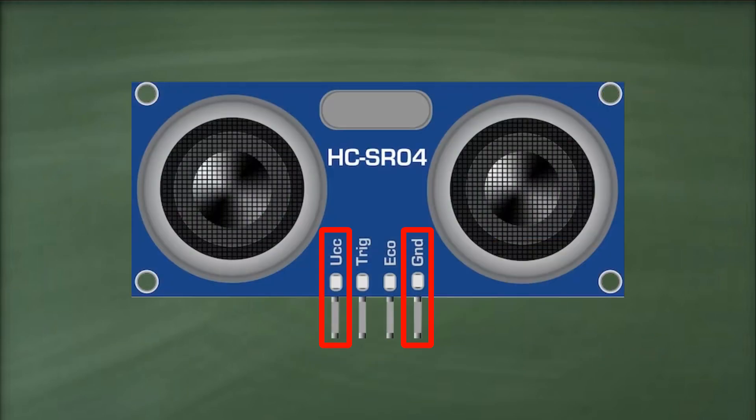Our sensor has four pins: VCC and GND for power, the trigger pin to initiate ultrasonic sound pulses, and the echo pin to receive the reflected pulses.